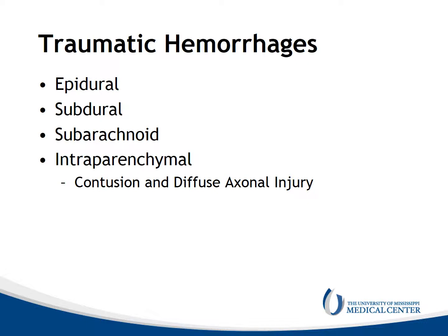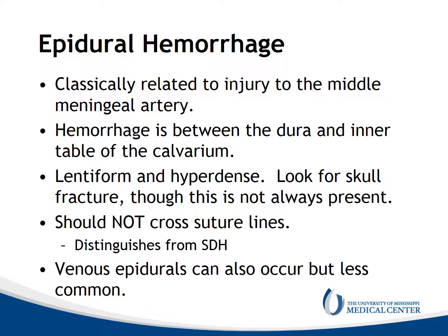Intraparenchymal hemorrhages may reflect contusion injury or diffuse axonal injury. Epidural hemorrhages are classically related to injury to the middle meningeal artery. The hemorrhage is located between the dura and inner table of the calvarium. These hemorrhages appear lentiform and hyperdense on CT. A skull fracture is often present, but not always. These hemorrhages should not cross the sutural lines, which helps distinguish epidural hemorrhages from subdural hemorrhages. Venous epidurals can also occur, but they are less common.